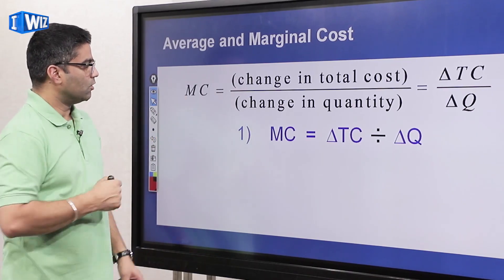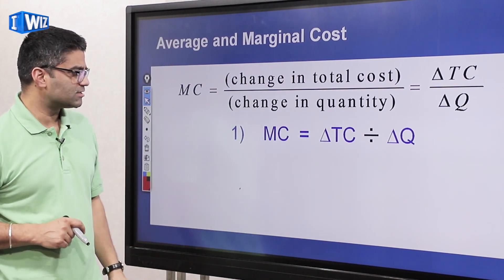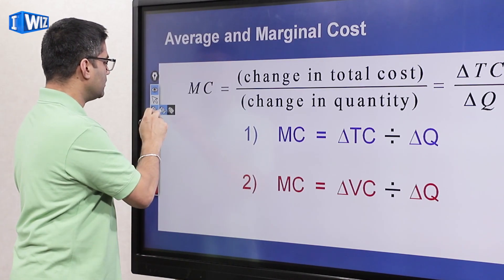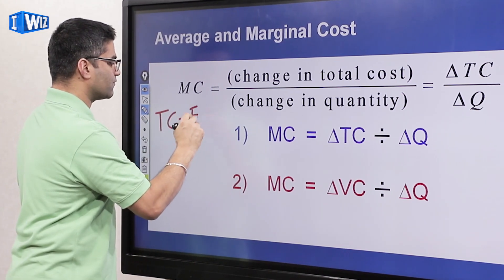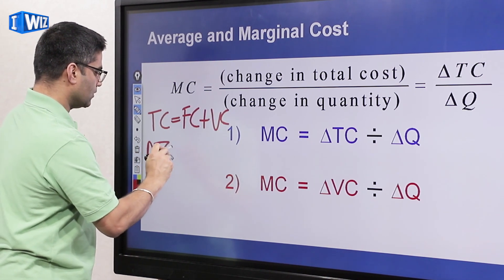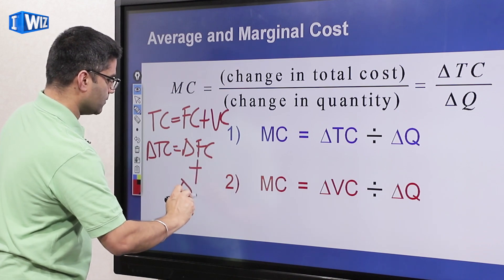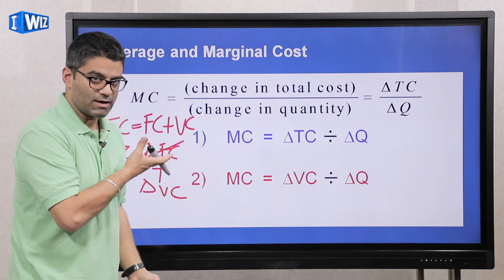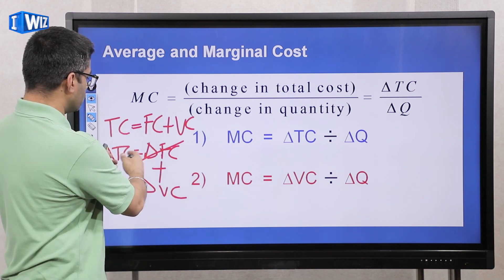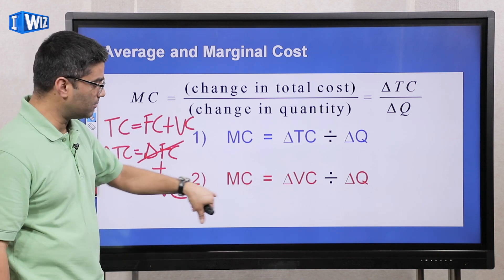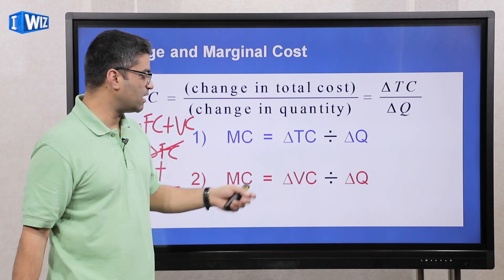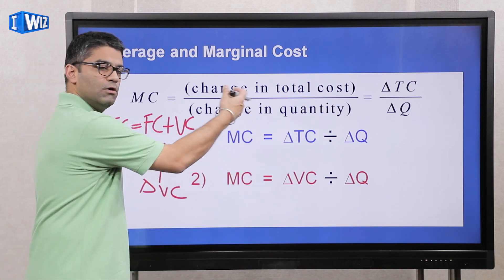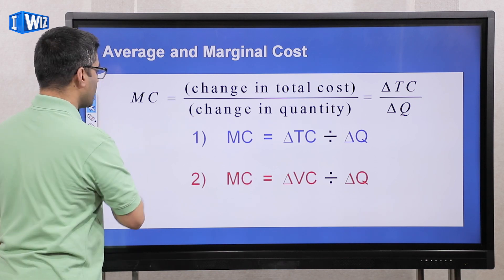MC is change in total cost divided by change in Q, and you can also write that as change in variable cost divided by change in Q. Why can it be either? Because total cost equals fixed cost plus variable cost, so change in total cost equals change in fixed cost plus change in variable cost. However, fixed costs never change — they are by definition fixed — so the change in fixed cost is always zero. Therefore change in total cost equals change in variable cost. When answering questions, sometimes you're given total cost and sometimes only variable cost — you can use either. Work through both columns in numerical examples and prove it to yourself.